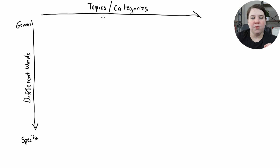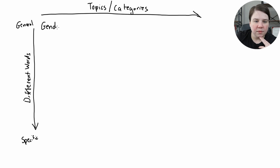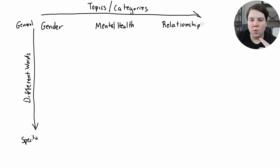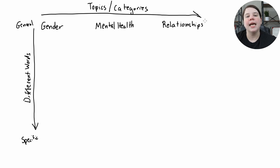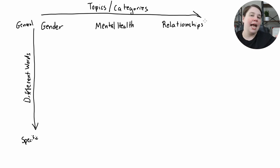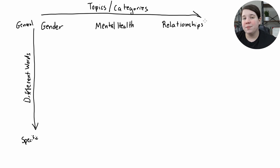I have three main topics and three columns going across the top. The first one is gender, the second is mental health, and the third is relationship. One thing that can mess people up is they go to Google Scholar but aren't sure what words to use. They can miss really good papers because Google Scholar is doing keyword searches — they're not running an AI algorithm to find synonyms. So if you're searching too general or too specific, you might not find all the papers you're looking for.